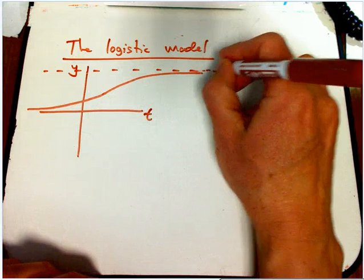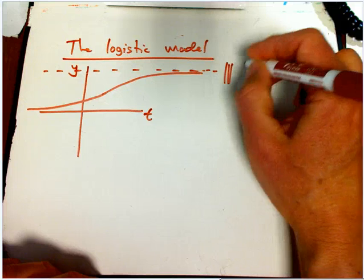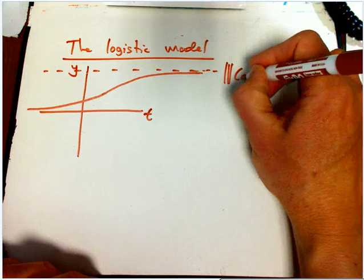There's a fairly simple way to modify an exponential function to have this behavior, and this is often called, like in a population example, which is the most common example for this, called the carrying capacity.